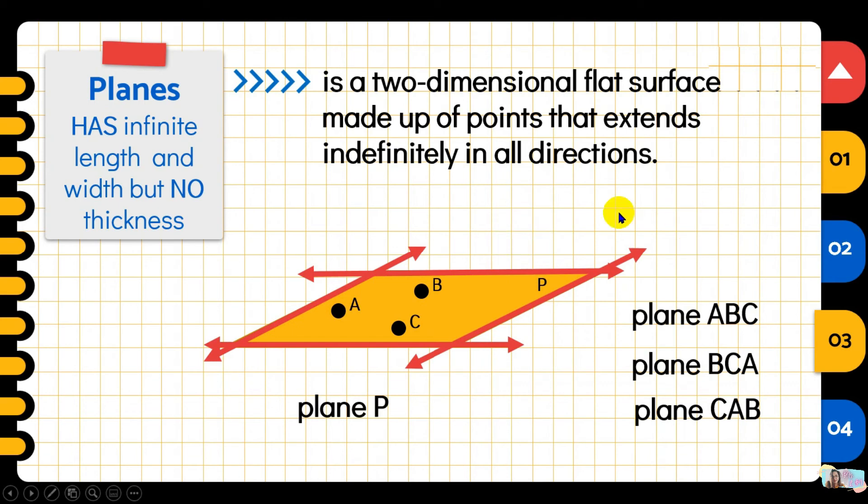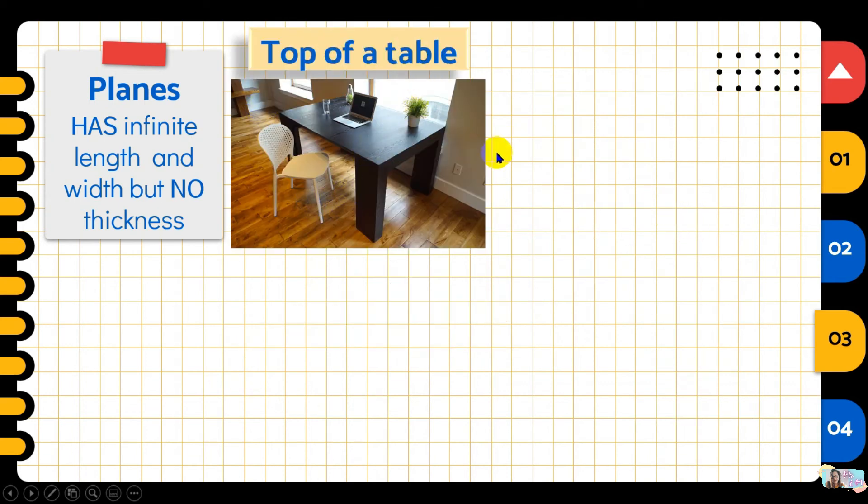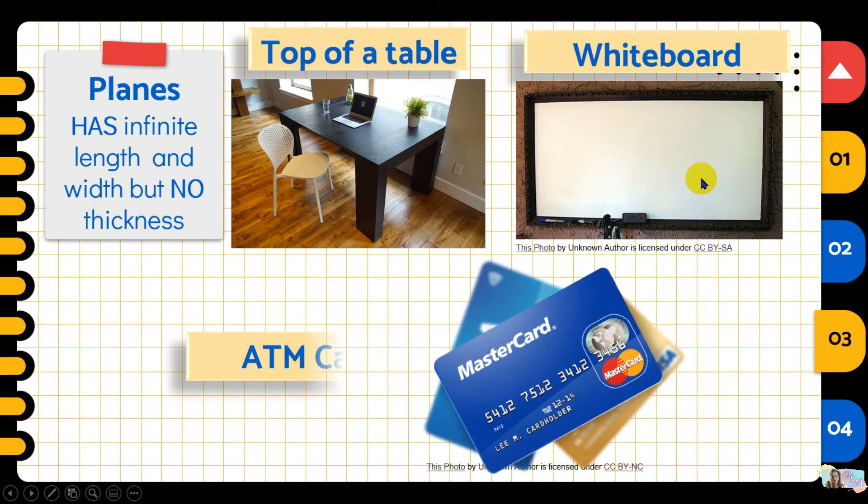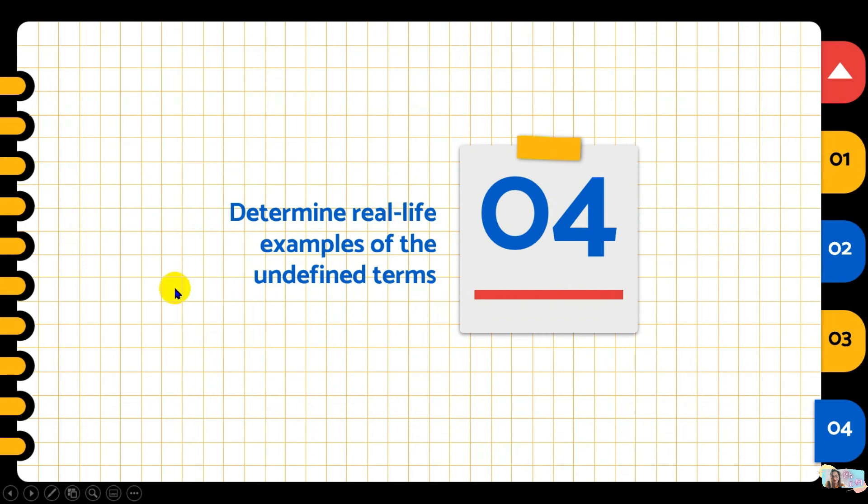What are the pictorial representations of plane in real life? First is top of the table. It's clear that is a plane. Another is the whiteboard or the blackboard. And of course the ATM card, though it's small. But again, it is a pictorial representation of a plane. Again, just look around you because we can find many more planes there.